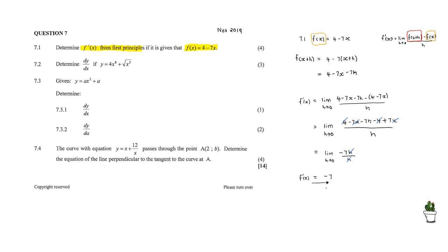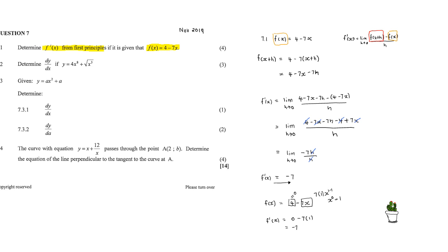You can confirm this using the rules of differentiation. Looking at f of x, the first term is the constant 4, whose derivative is 0. The second term is 7x, and the derivative is 7 times 1 times x to the exponent (1 minus 1), which is x to the exponent 0, and anything to the exponent 0 is 1. So f prime of x equals 0 minus 7 times 1, which is just minus 7.